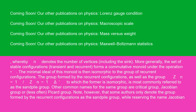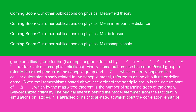Note, however, that some authors only denote the group formed by the recurrent configurations as the sandpile group, while reserving the name Jacobian group or critical group for the isomorphic group defined by ℤⁿ⁻¹ / ℤⁿ⁻¹Δ̃, or for related isomorphic definitions. Finally, some authors use the name Picard group to refer to the direct product of the sandpile group and ℤ, which naturally appears in a cellular automaton closely related to the sandpile model, referred to as the chip-firing or dollar game. Given the isomorphism stated above, the order of the sandpile group is the determinant of Δ̃, which by the matrix tree theorem is the number of spanning trees of the graph.